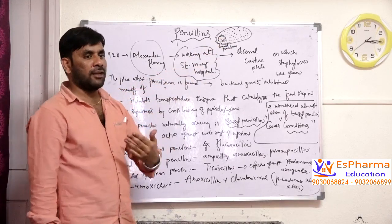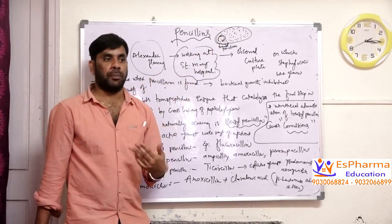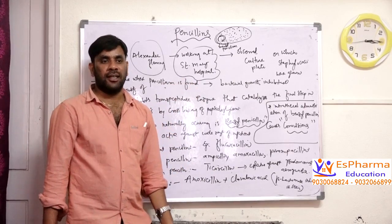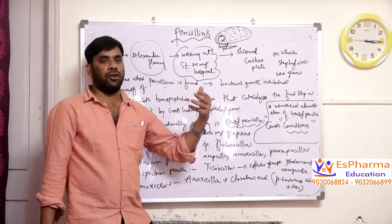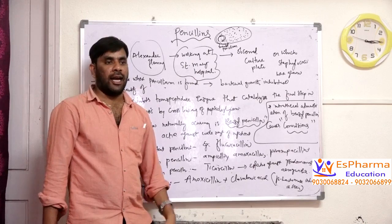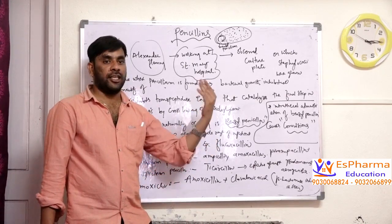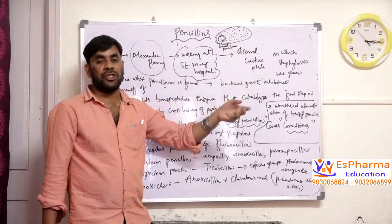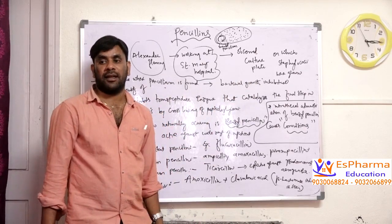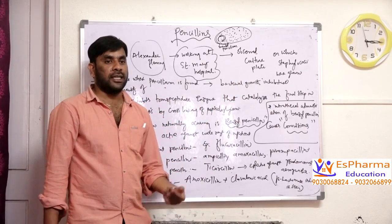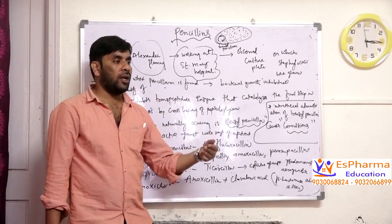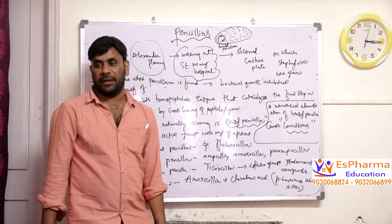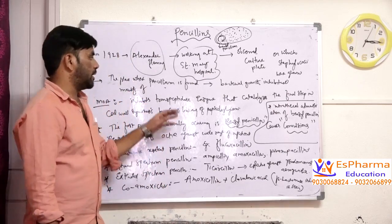He extracted the mould from the Penicillium genus, then extracted penicillin from it and started using it on growing cultures of bacteria. In other cultures of bacteria where penicillin was used, it inhibited the growth of the bacteria. From that he confirmed that this mould, like a fungus, also has antibacterial activity.